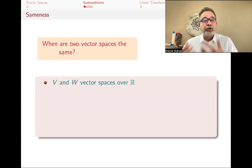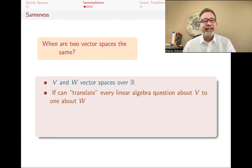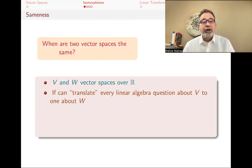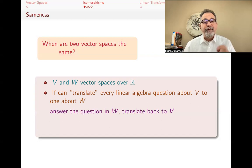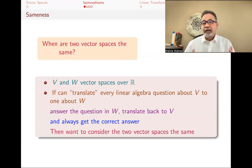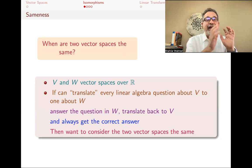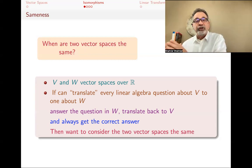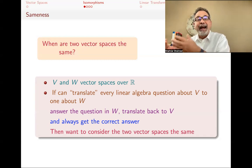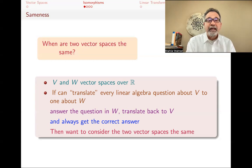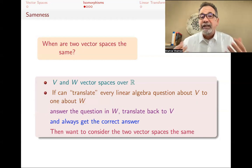Let's say we have two vector spaces over R — meaning the scalars are real numbers. We are interested in knowing: can I translate every linear algebra question from vector space V to one about W, answer the question in W, and then translate back? If we can always do that and always get the correct answer, then we want to think of the two vector spaces as being the same as far as linear algebra is concerned.